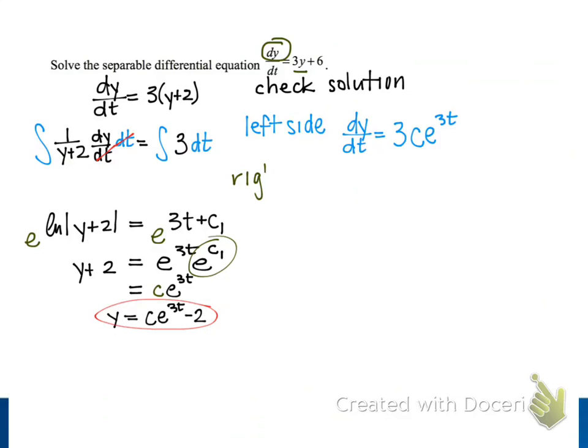Next, on the right side of our differential equation is 3y plus 6, and we want to find this for our value of y. So we substitute in c e to the 3t minus 2 for y, and then next we can distribute the 3, so we get 3c e to the 3t minus 6 and plus 6. So that minus 6 and plus 6 simplifies to 0, leaving us with 3c e to the 3t. So that's our result for the right side of our equation using our solution for y.